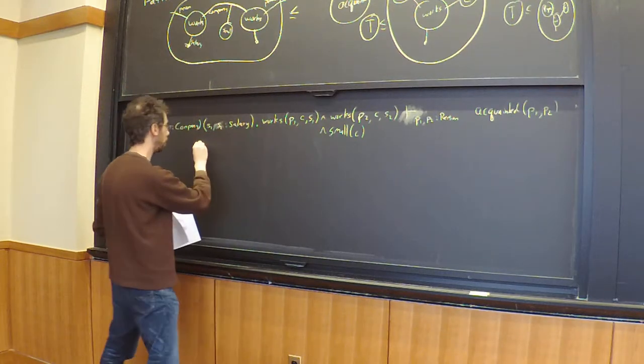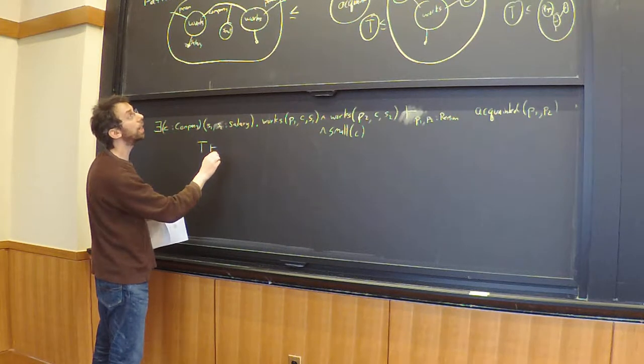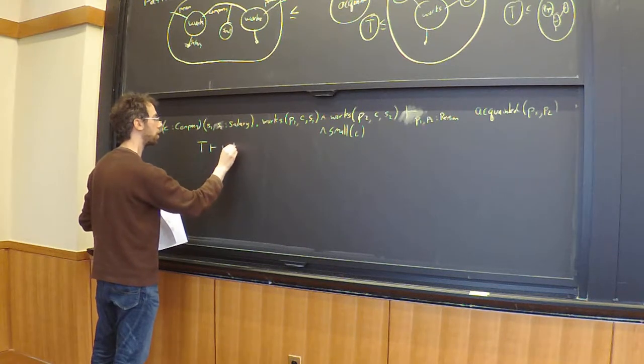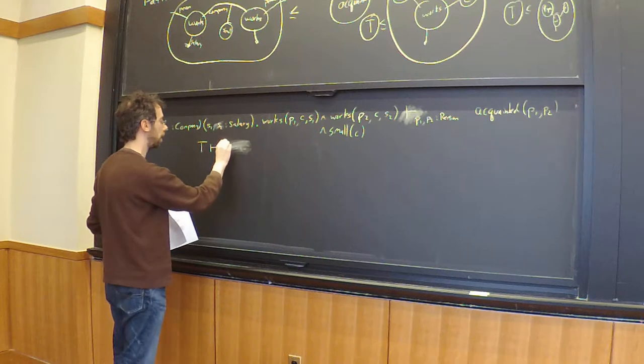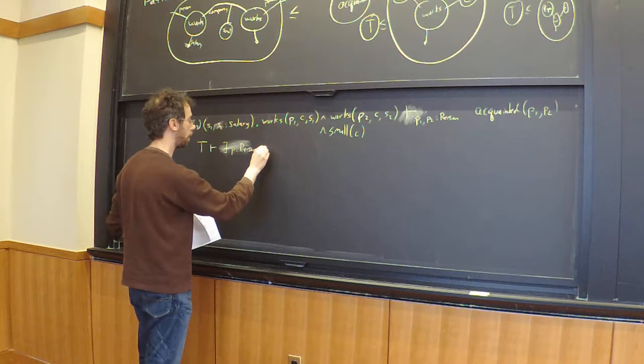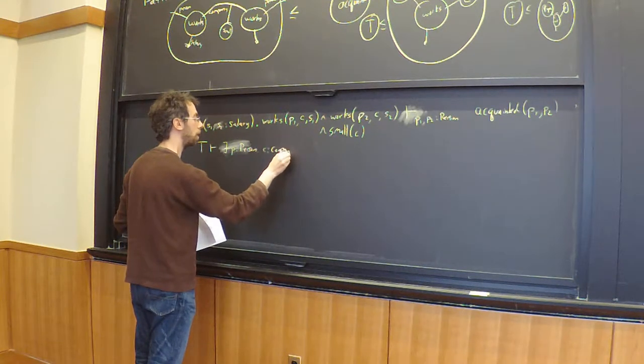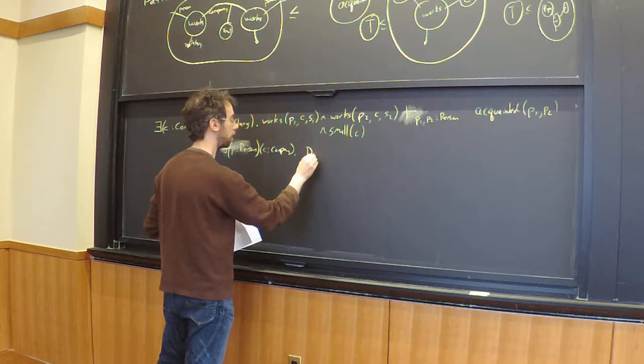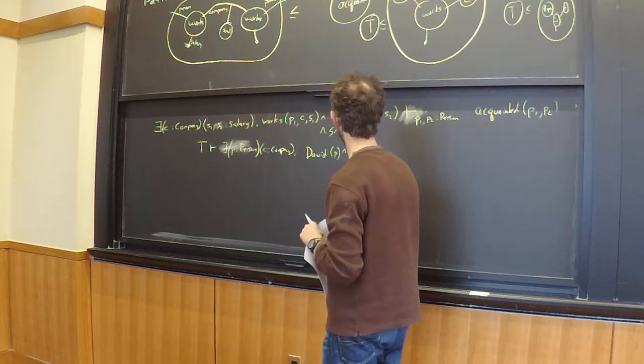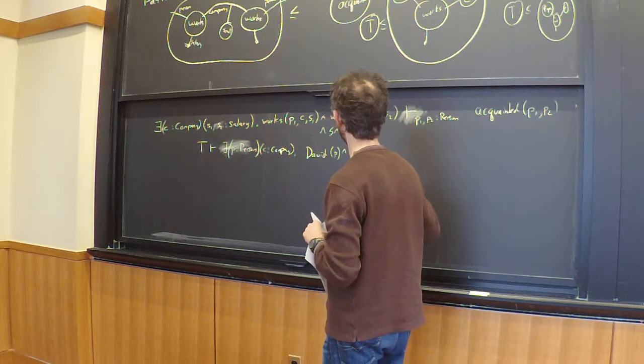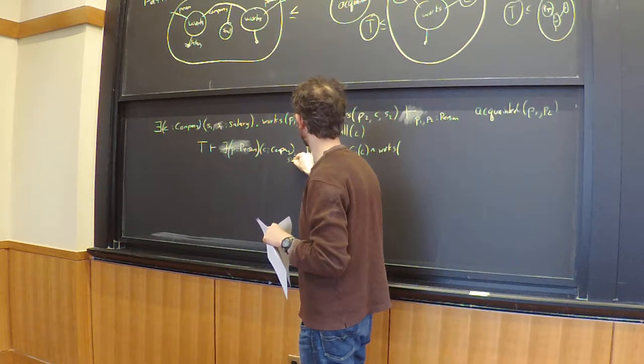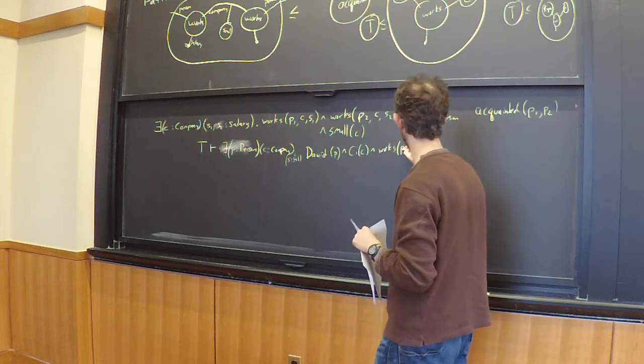And over here, I would write things like: true implies with no context that... exists P person, C company, money, such that... that person is a type of David, and that company the type of CI, and a salary, works T, C, S.